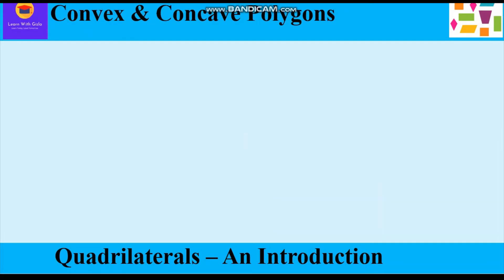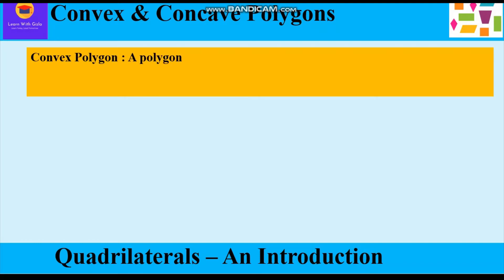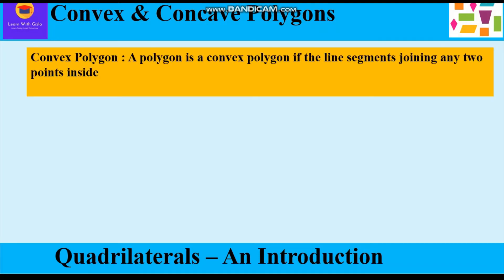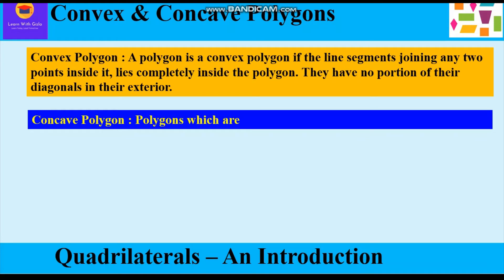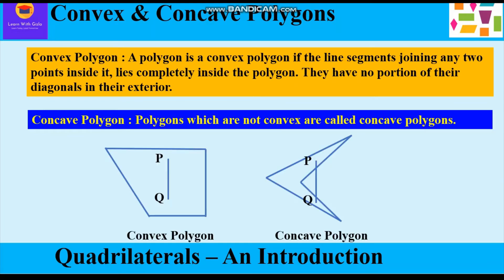Now we shall learn about convex and concave polygons. A polygon is a convex polygon if the line segment joining any two points inside it lies completely inside the polygon — they have no portion of their diagonals in their exterior. Concave polygons are polygons which are not convex. In the first figure, the line segment joining interior points P and Q lies wholly inside the polygon, making it convex. In the second figure, the line segment does not lie wholly in the interior, making it a concave polygon.